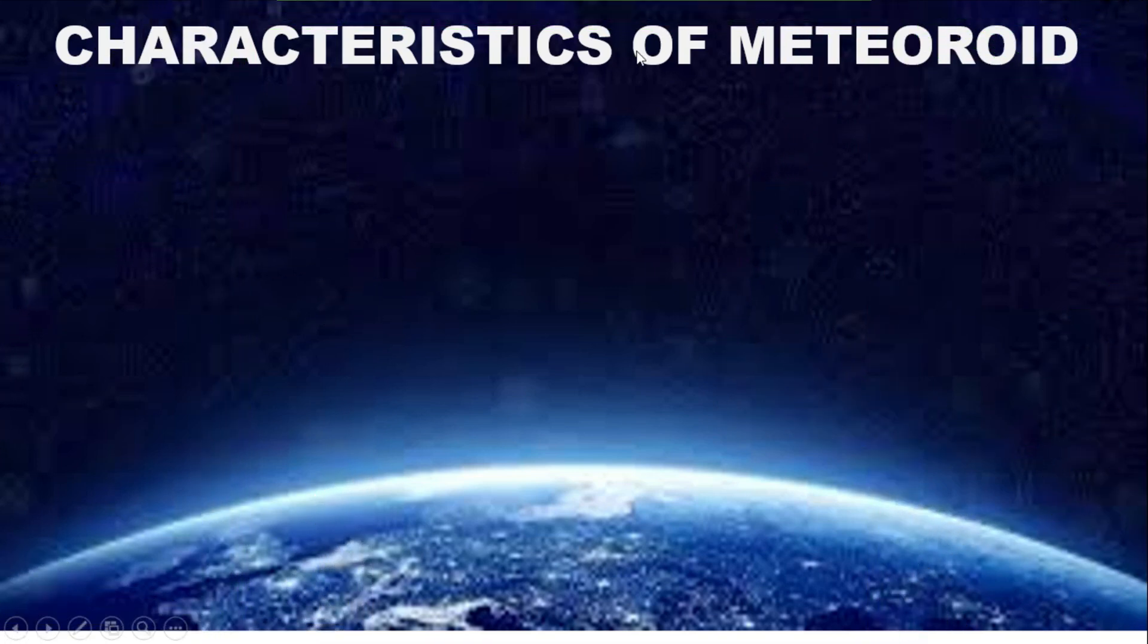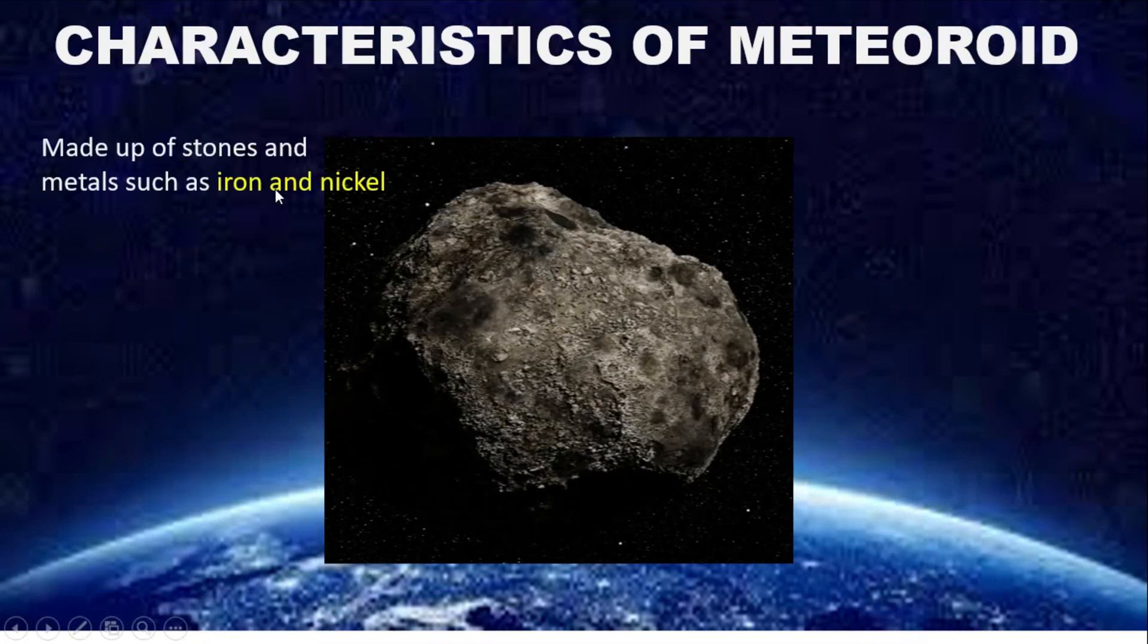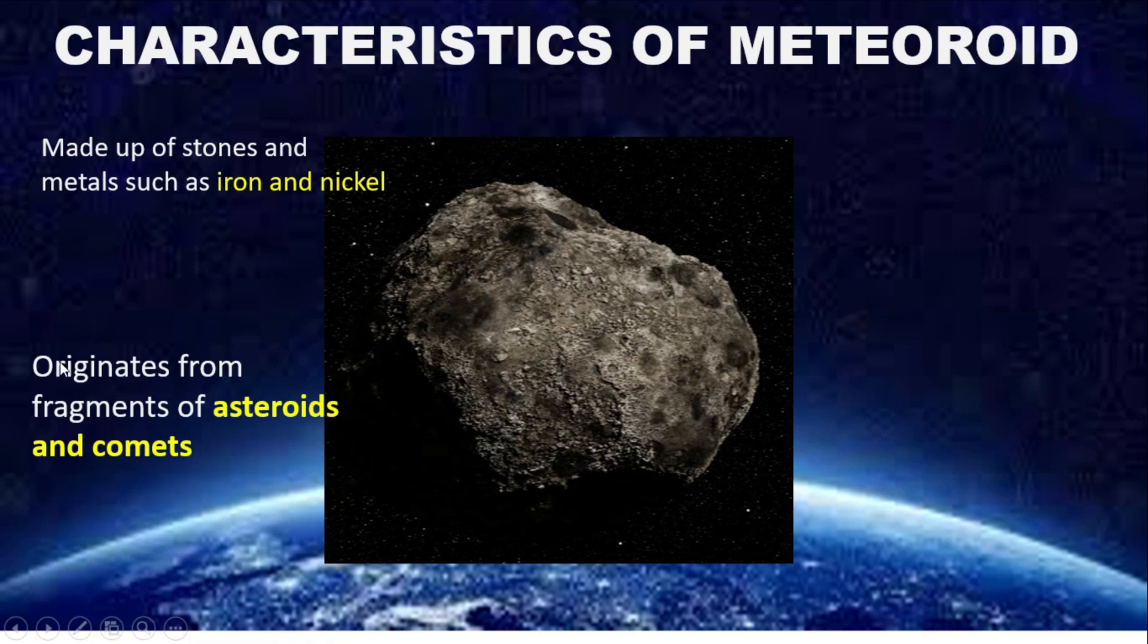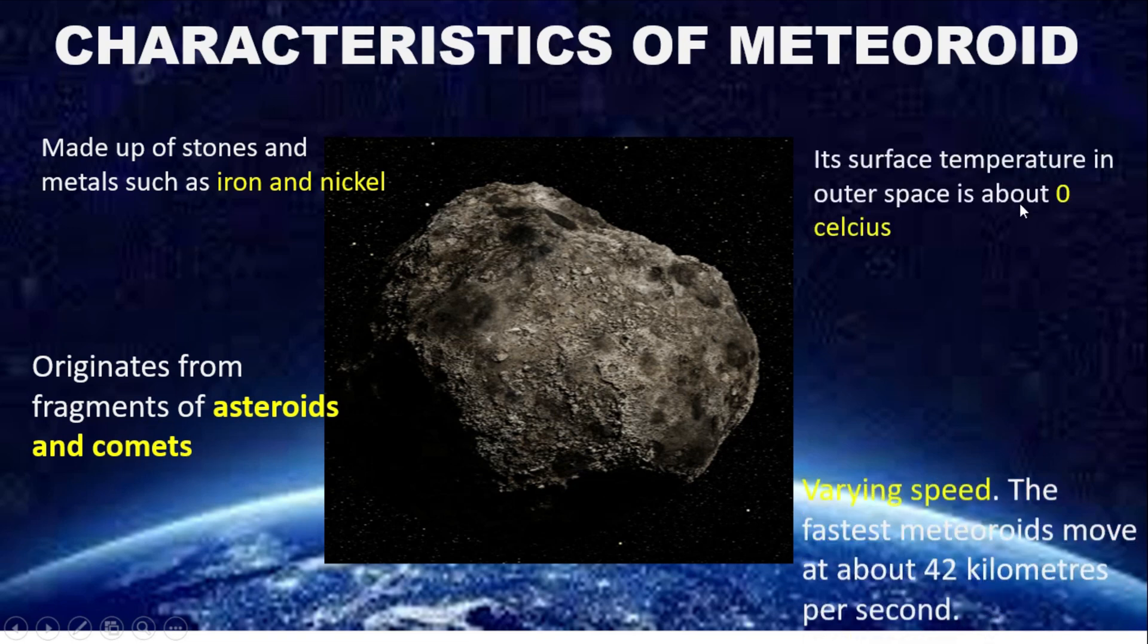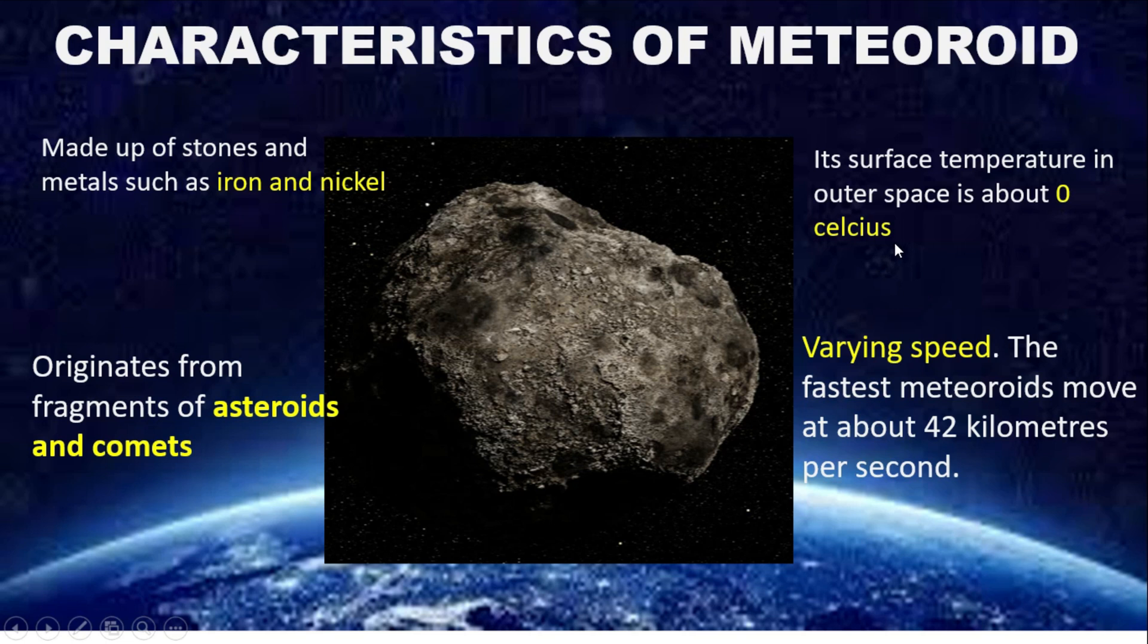What are the characteristics of a meteoroid? It's made up of stone and metal such as iron and nickel. It originates from fragments of asteroids and comets. Its surface temperature is about zero degrees Celsius and it has varying speed. The fastest meteoroids move at about 42 kilometers per second.